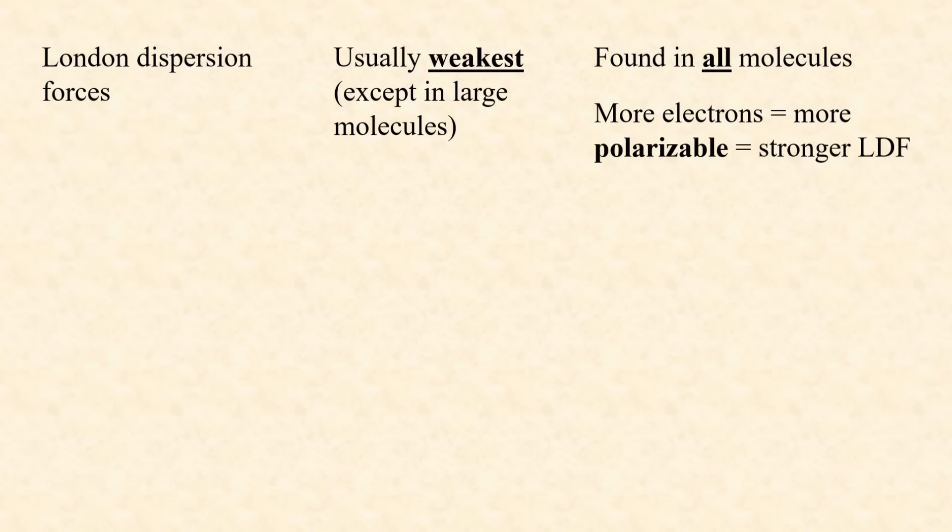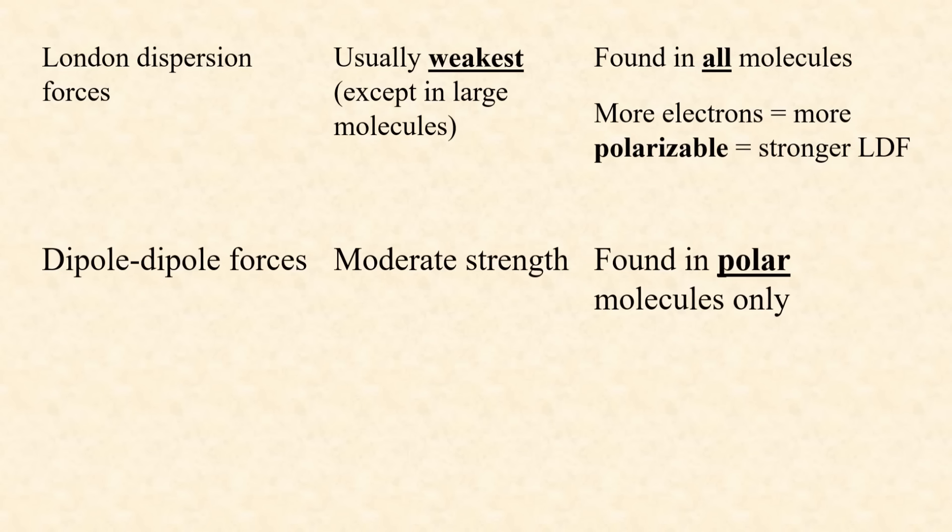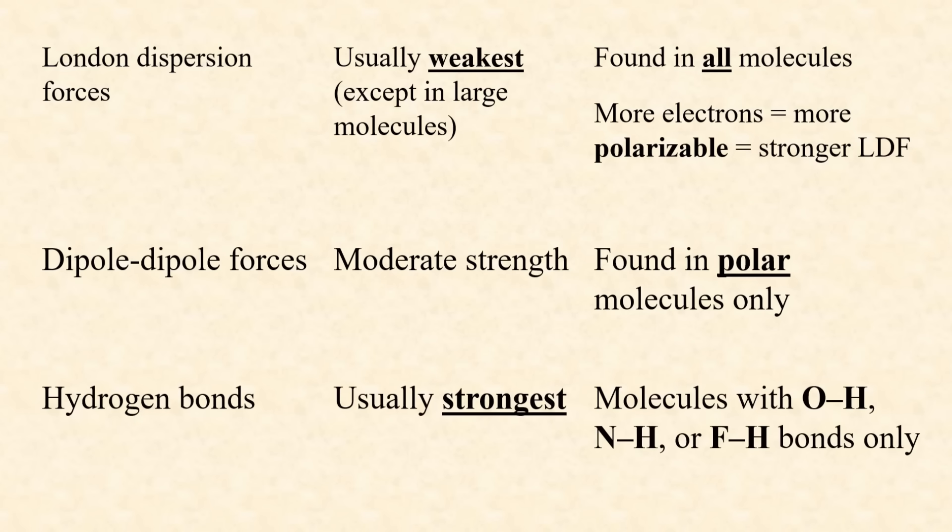Polar molecules exert dipole-dipole forces on each other. The positive pole of one molecule attracts the negative pole of its neighbors. These forces are usually stronger than dispersion forces. Any molecule that contains a hydrogen atom bonded to an oxygen, fluorine, or nitrogen atom will exhibit hydrogen bonding. Hydrogen bonding is an especially strong type of intermolecular force.